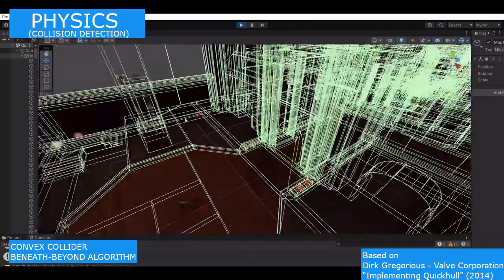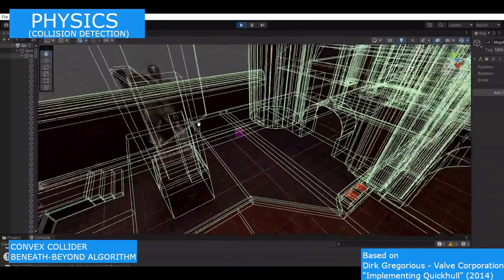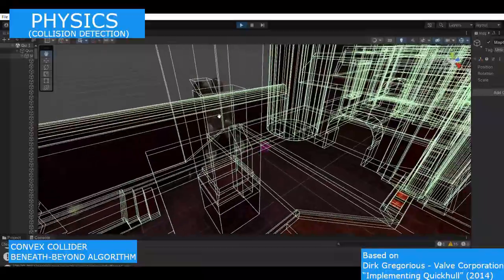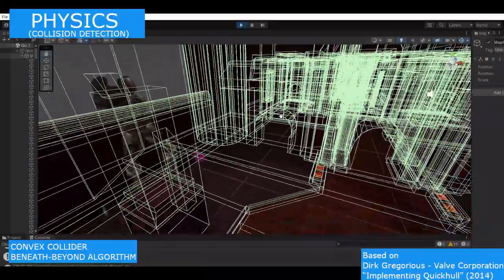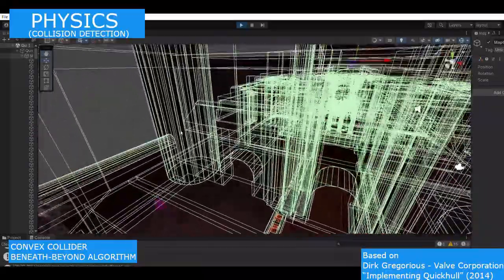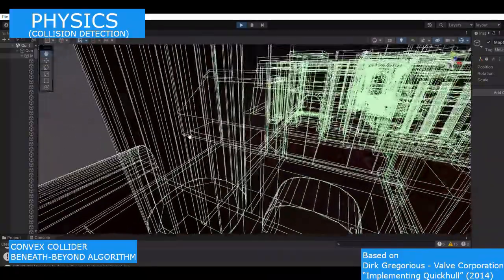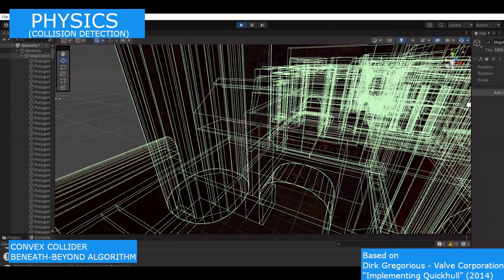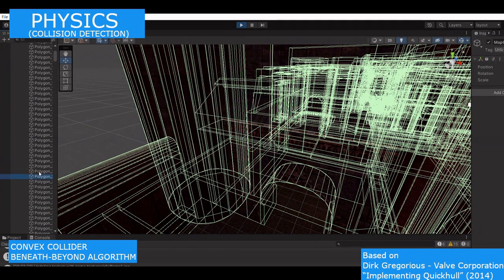For the Bezier surfaces, we use mesh colliders. Basically, we use an approximation, a tessellation of the Bezier surface, and it's an implementation for a small patch of the Bezier curve. And that's how we get the colliders.